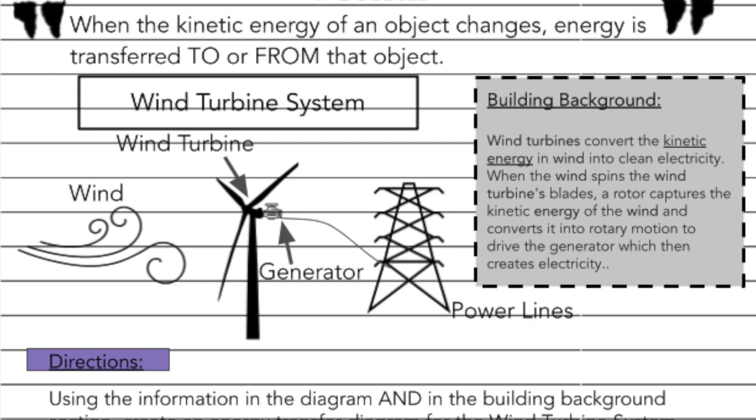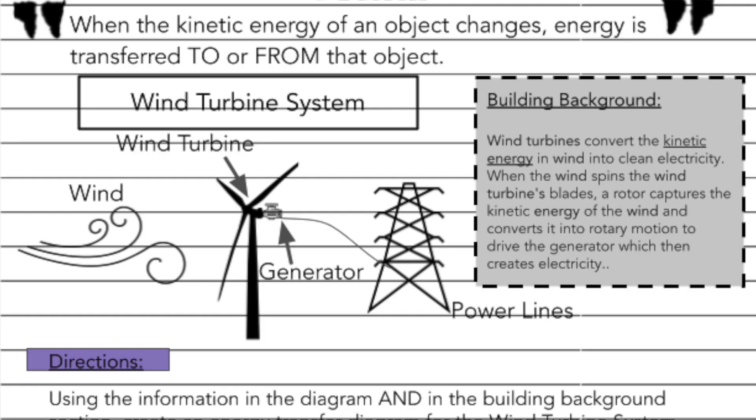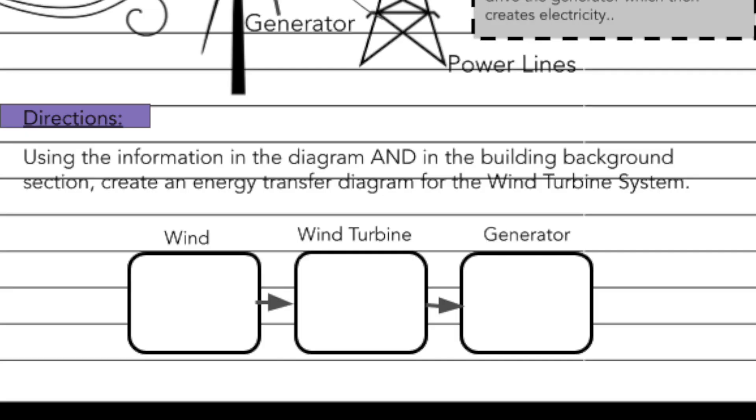In our investigation today, we're going to look at an animation of a wind turbine system and collect some data. But first, it's important to recognize the kinds of energy that are in one of these systems. To do that, at the bottom of your page you'll see an energy diagram.